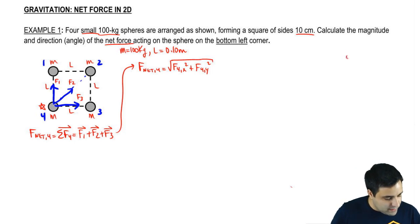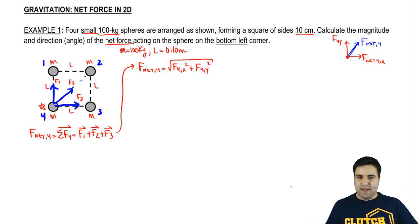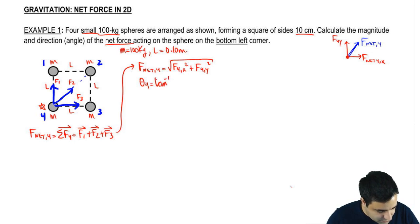So a key thing I need you to remember is that every vector is made up of components, and the magnitude of any vector is given by the Pythagorean theorem of its components. So F net 4 is the square root of F4x squared plus F4y squared. And the angle of the net force on 4, I'm just going to call that theta 4, is the arctangent of F4y over F4x.